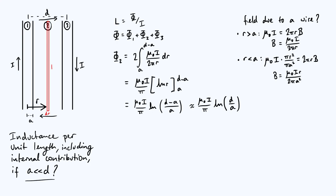We also need expressions for φ₁ and φ₃. By symmetry, φ₁ and φ₃ should be equal — there's no difference between the two wires, so they contribute equal amounts of flux linkage. This is conceptually a bit harder than the flux linkage through region 2. I'm going to start by doing it slightly incorrectly and then explain why we have to make an adjustment, because I think that'll be the clearest way to approach this.